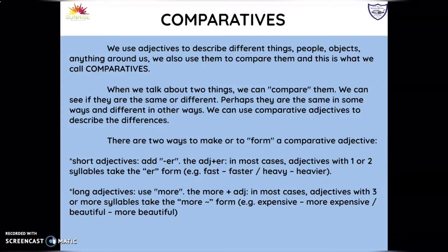We use comparatives to make these descriptions. There are two ways to form a comparative: the first is with short adjectives, where we add -er at the end. These adjectives in most cases have one or two syllables. The other form is with long adjectives, where we use 'more' before the adjective.